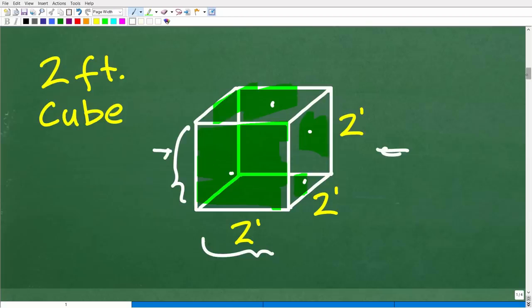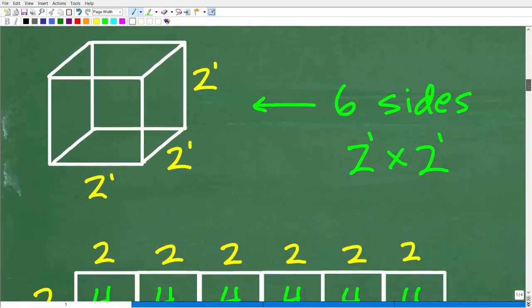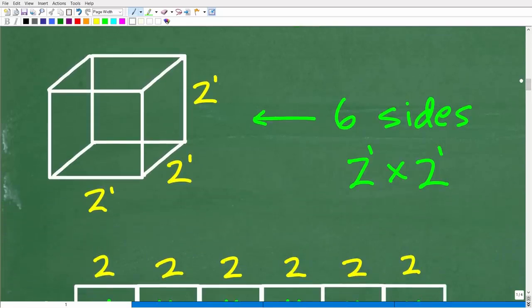All right, so let's go ahead and take a look at this problem in this way. So now that we understand that we need six sides of two-foot squares—two feet by two feet—we need six sides here, or six squares of two feet by two feet to construct our two-foot cube.